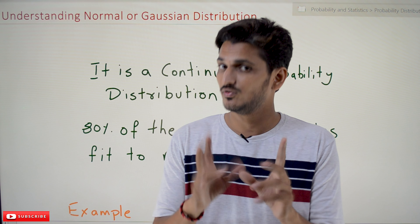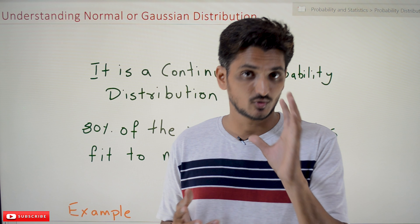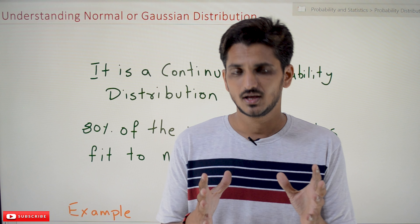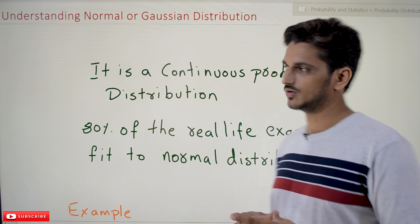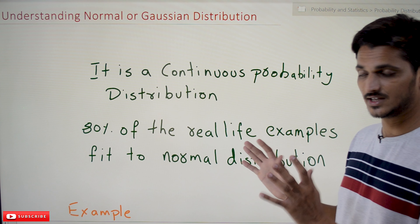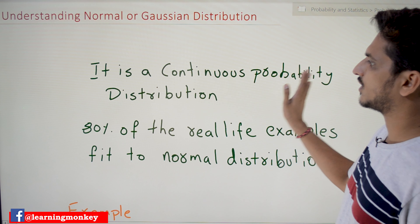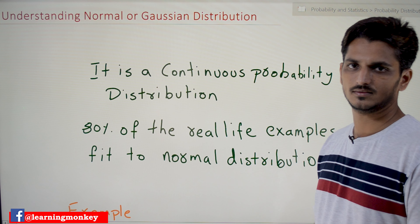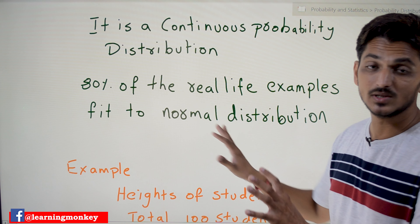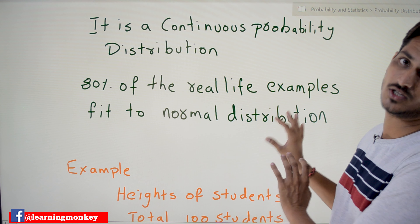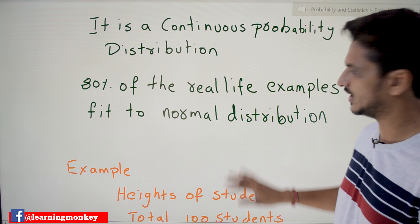Normal distribution is a very important distribution — eighty percent of the time we are going to use this distribution, so please concentrate. Coming to today's class, let's try to understand the graphical intuition of normal distribution with an example. It is a continuous probability distribution, and eighty percent of real-life examples fit this normal distribution, which we also call Gaussian distribution.